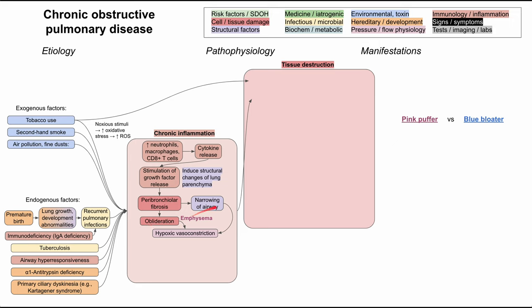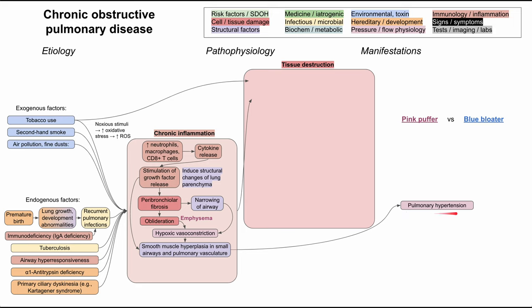When you have obliteration of the airspaces and narrowing of the airway, they both contribute to hypoxic vasoconstriction. Hypoxic vasoconstriction, in addition to growth factor release, can lead to smooth muscle hyperplasia in the small airways and pulmonary vasculature. When those airways become very tight due to smooth muscle hyperplasia, this leads to pulmonary hypertension, and we'll see the downstream manifestations of that later.